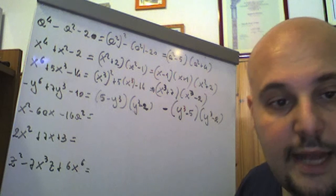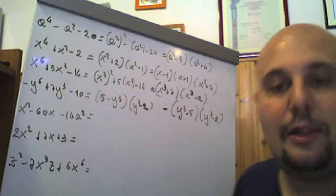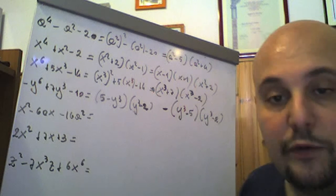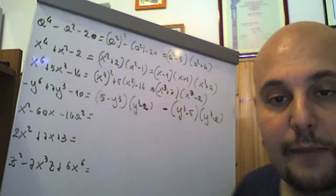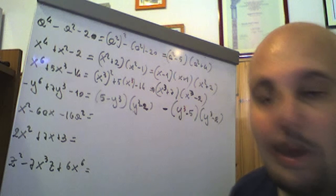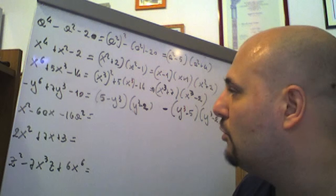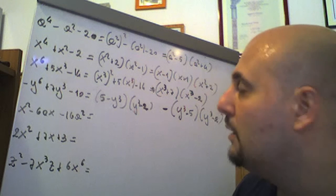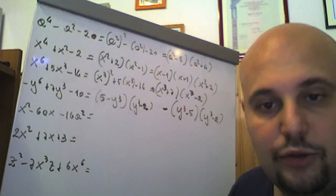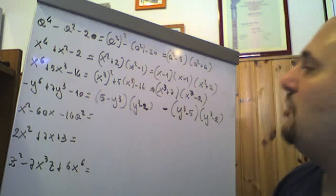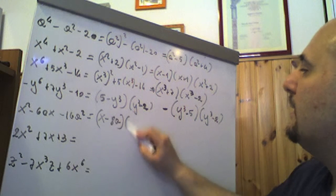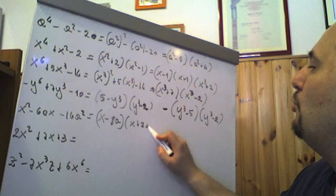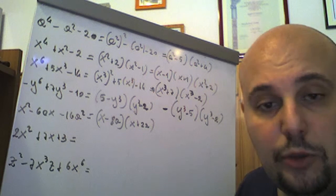X² − 6ax − 16a²: passiamo a un trinomio notevole con coefficienti letterali. Dobbiamo trovare due termini che moltiplicati diano −16a² e sommati diano −6a. Abbiamo −8a + 2a = −6a e −8a × 2a = −16a². Quindi questo è (x − 8a)(x + 2a), scomposizione di x² − 6ax − 16a².